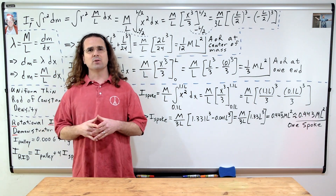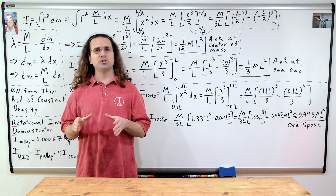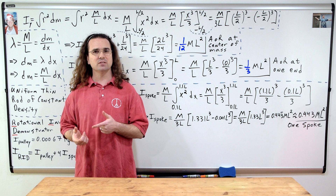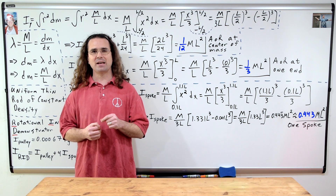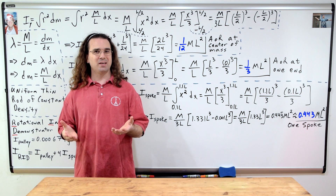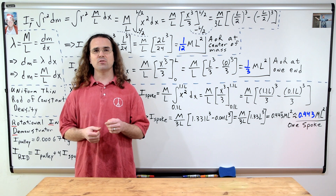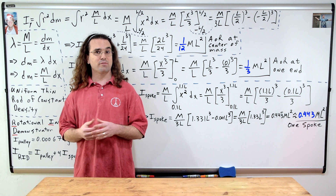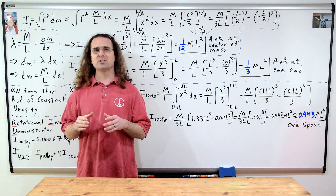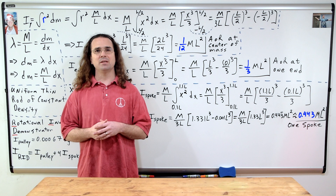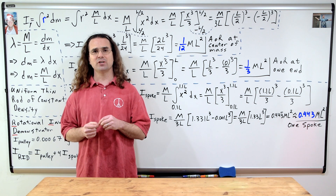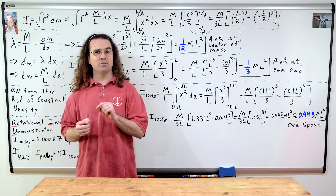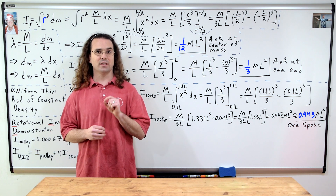Before we substitute in numbers, take a moment to appreciate that we showed the rotational inertia of a long thin rod increases as the axis of rotation gets farther from the center of mass. It should, because as the axis of rotation gets farther from the center of mass, more of the mass of the rod is farther from the axis — in other words, the average r value increases. That means the farther the axis of rotation is from the center of mass, the larger the resistance of the rod to angular acceleration.